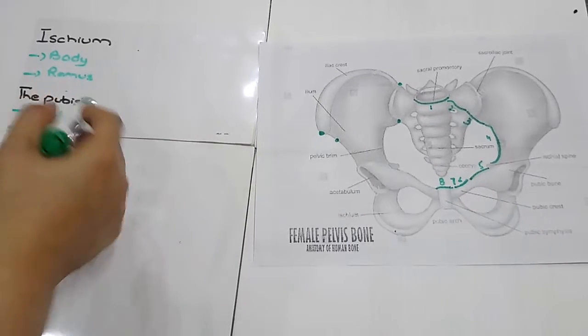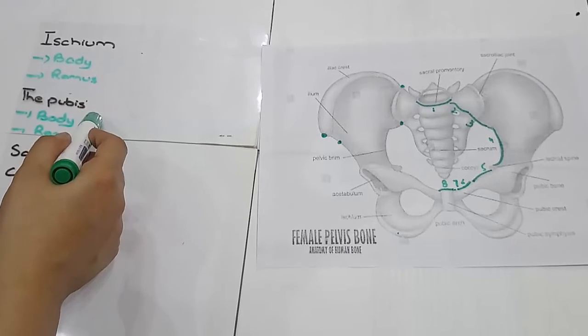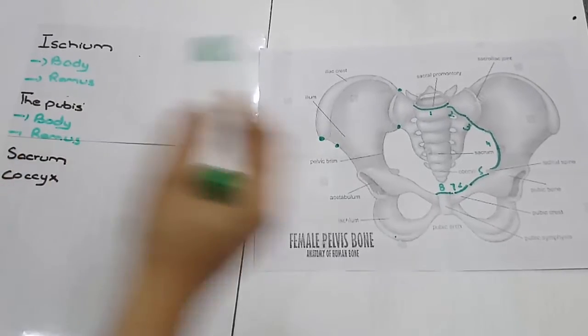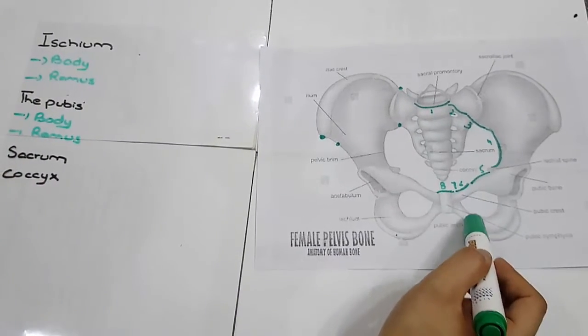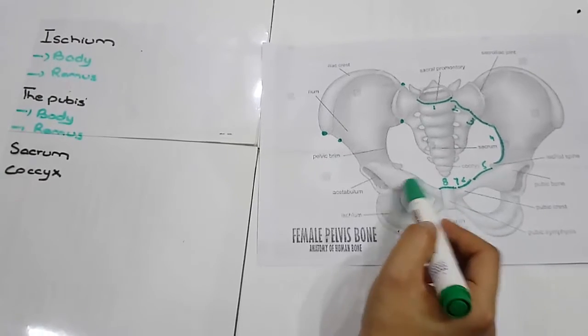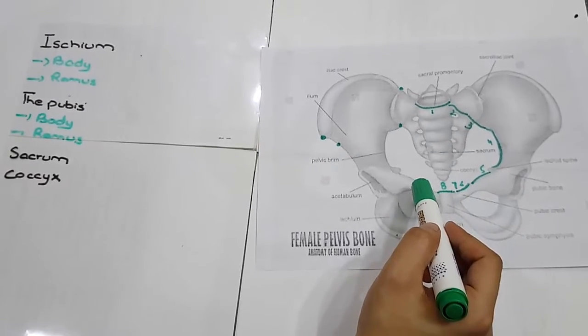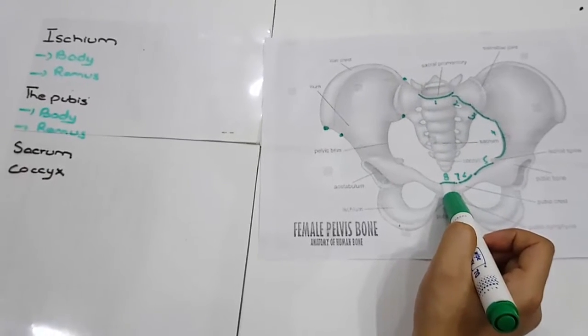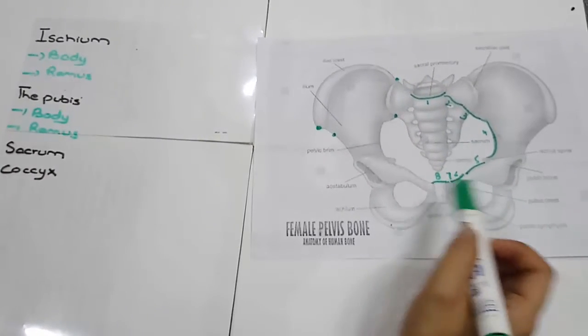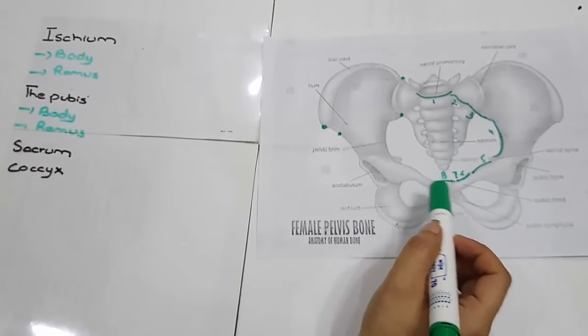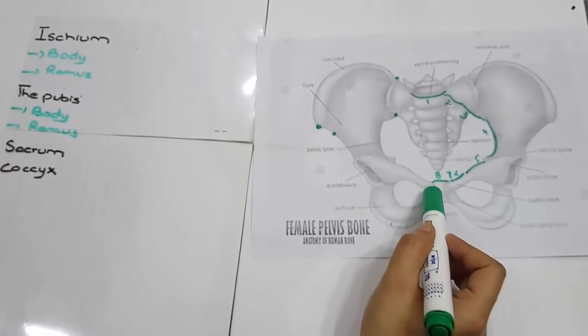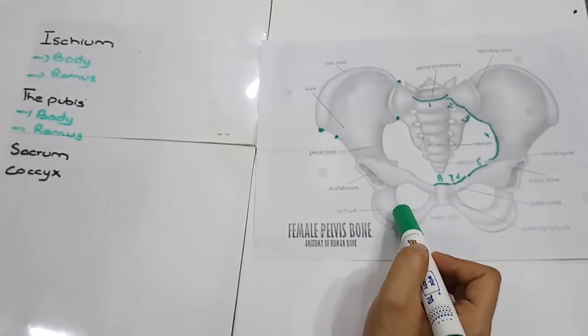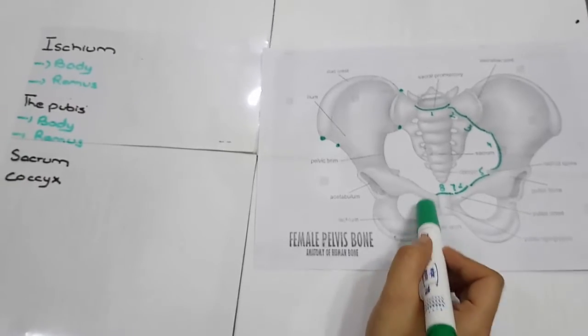Now the pubis also has a body and a ramus. It forms the anterior part of the pelvis. The two pubic bones meet at symphysis pubis. Here you could see the symphysis pubis. The space enclosed by the body of the pubic bone and the ramus and the ischium is called the obturator foramen.